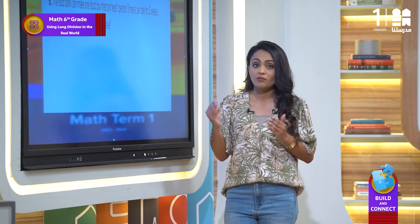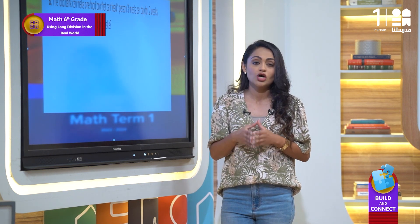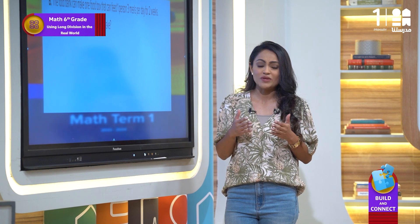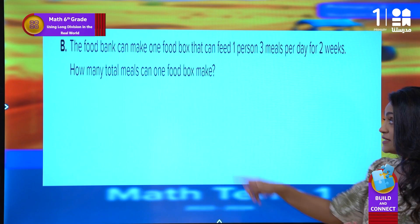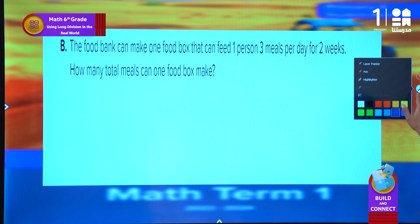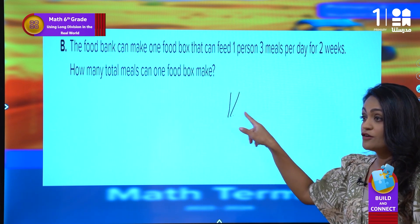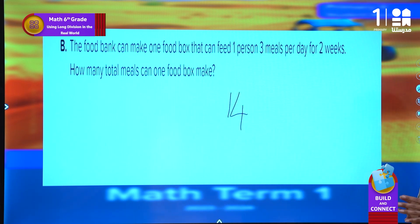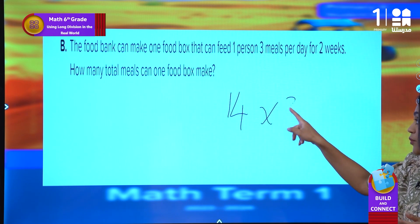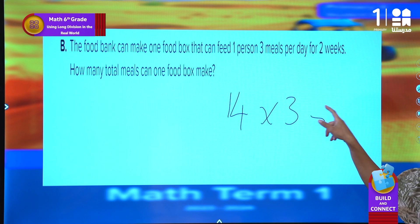So we will use multiplication to get the number of meals in two weeks. How many days do we have? 14 days. There are three meals per day, so we will multiply 14 by 3 to get 42 meals per box.